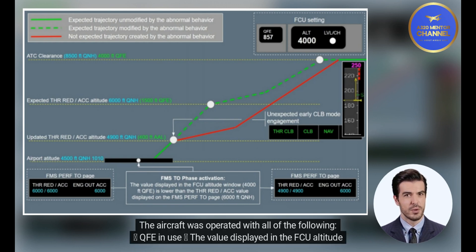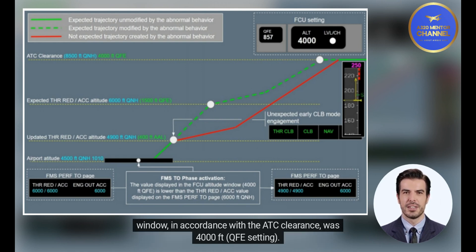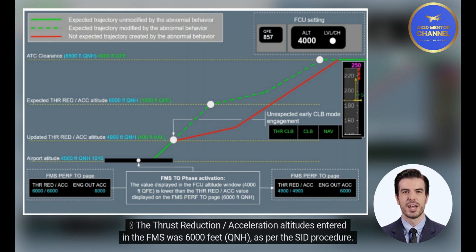The aircraft was operated with all of the following: QFE and the value displayed in the FCU altitude window, in accordance with the ATC clearance, was 4,000 feet QFE setting. The thrust reduction/acceleration altitudes entered in the FMS was 6,000 feet QNH, as per the SID procedure.